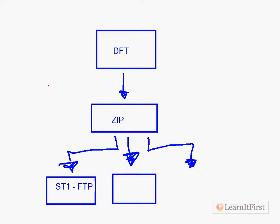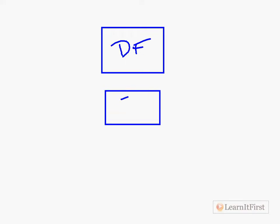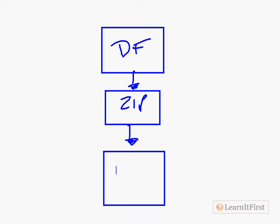Or I could do the same thing with a single script task. So here's my data flow and then my zip step, and then I can have a single script task. In that script task, I simply use the expression to say I want you to load up this particular entry point.